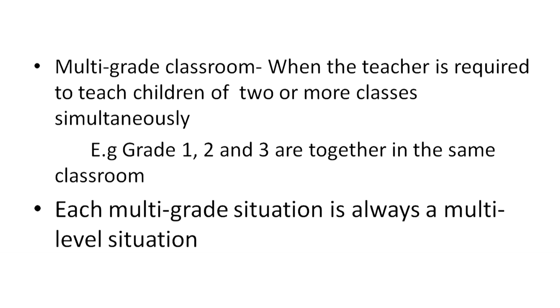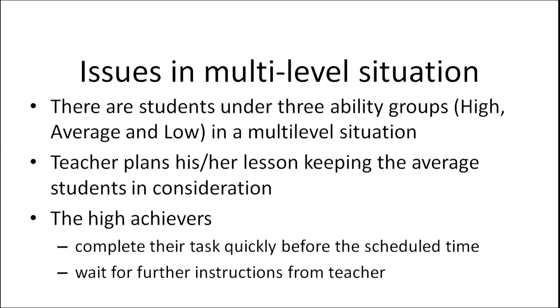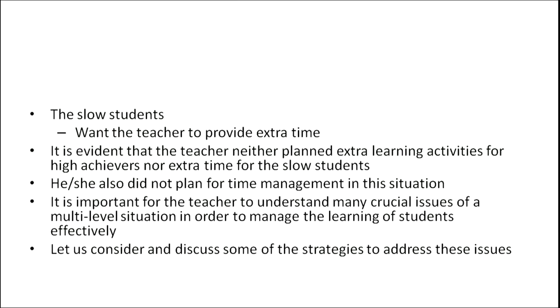There are various issues related to a multi-level situation. Although there are students with three different abilities — high, average, and low — the teacher often plans lessons keeping the average student in mind. As a result, high achievers or fast learners complete tasks quickly before the scheduled time is over and wait for further instructions, potentially causing disturbance. For slow learners, a different scenario unfolds — they may not be able to finish the given task in the prescribed time.